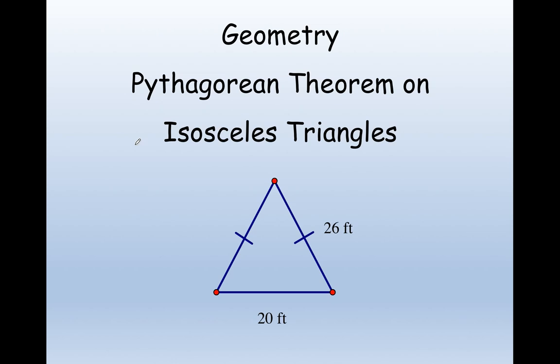Alright, let's try some Pythagorean theorem on isosceles triangles. Okay, if I drop my altitude on an isosceles triangle, what that's going to do is that's going to take my isosceles triangle and remember,